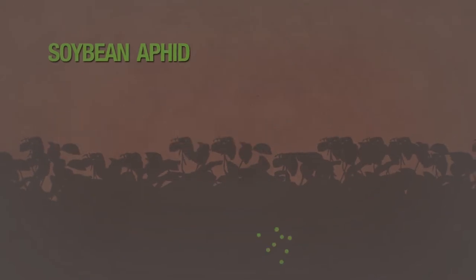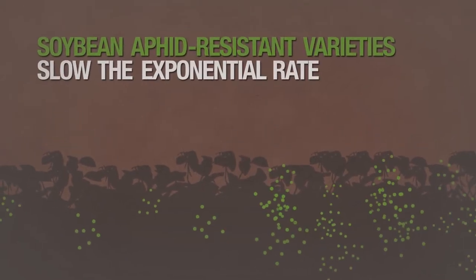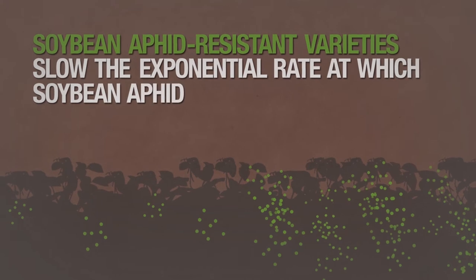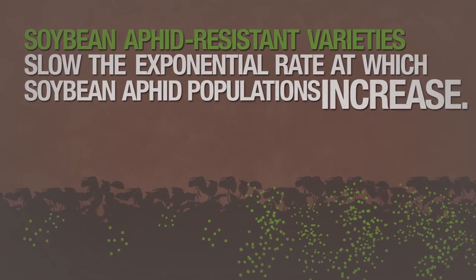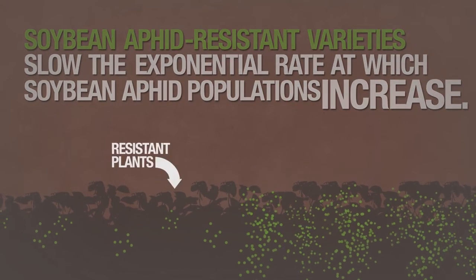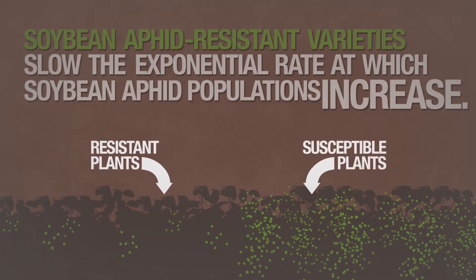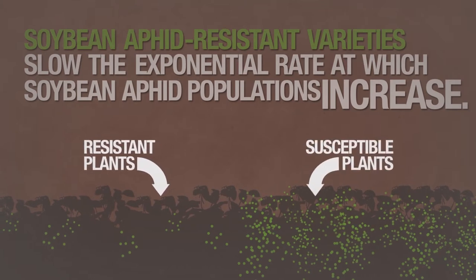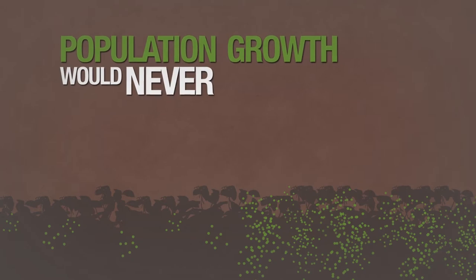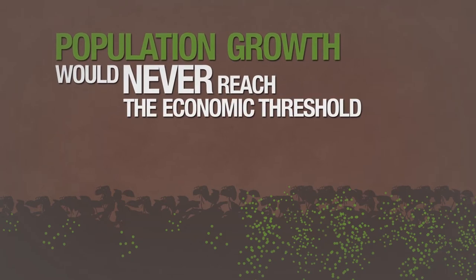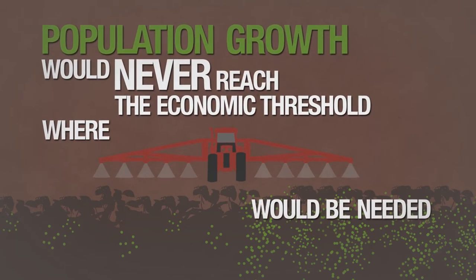Soybean aphid-resistant varieties slow the normal exponential rate at which soybean aphid populations increase over the season. The resistant plants won't be aphid-free, but they will have fewer aphids than susceptible plants. Ideally, the population growth would never reach the economic threshold where an insecticide application would be needed.